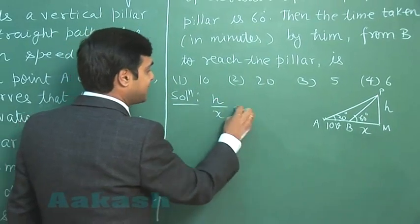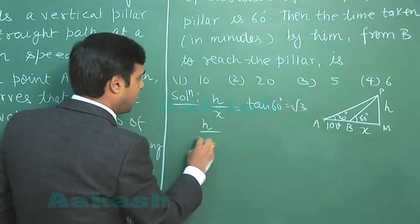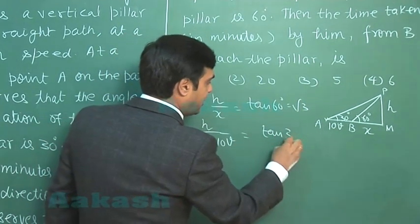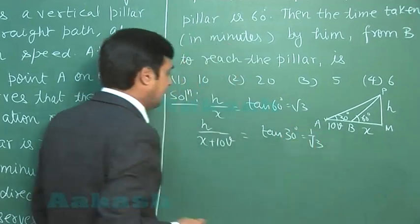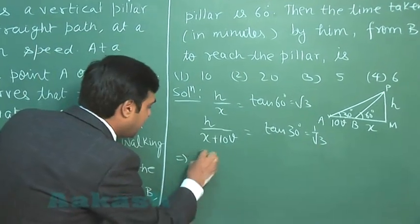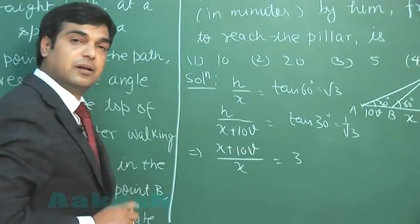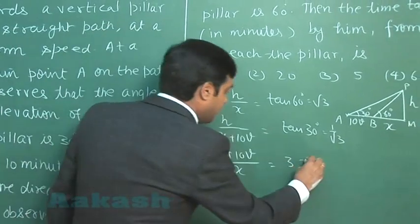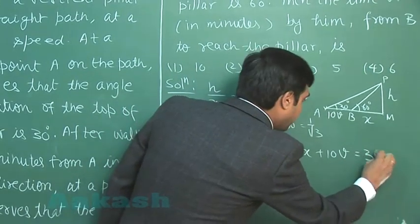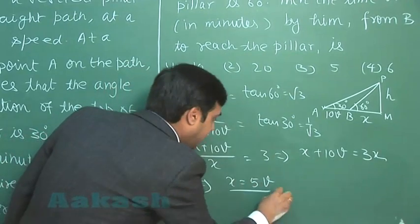So simply applying H/X is tan 60, that is √3, while H/(X+10V) is equal to tan 30 degrees, that is 1/√3. Dividing the two, we can see (H/X) upon (H/(X+10V)) giving me (X+10V)/X equals 3. This is clear. So simplifying, we are getting here X+10V is equal to 3X, or X is equal to 5V. So this is clear.